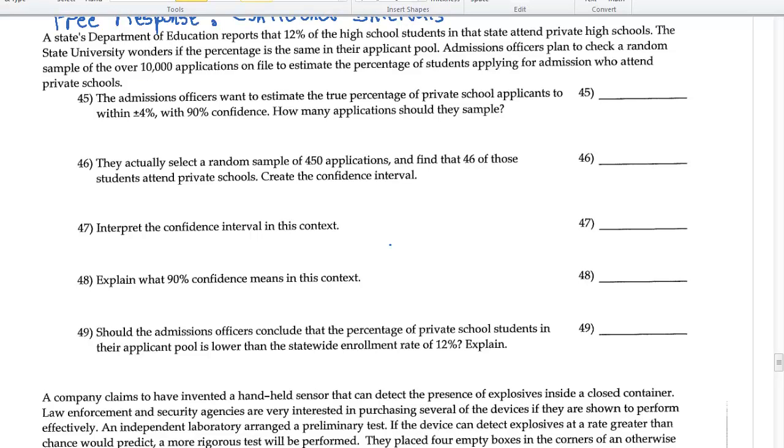The State Department of Education reports that 12% of high school students in that state attend private schools. The state university wonders if the percentage is the same in their applicant pool. Admission officers plan to check a random sample over 10,000 applications on file to estimate the percentage of students applying for admission who attend private schools.